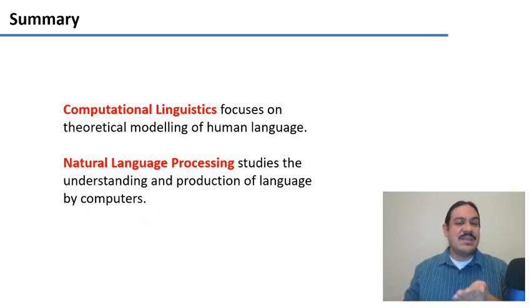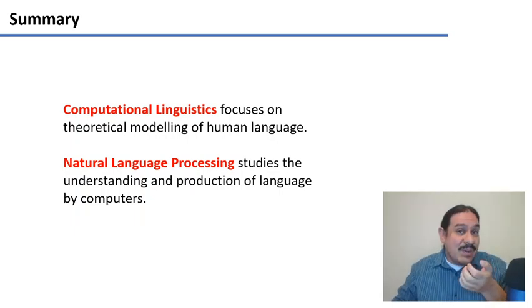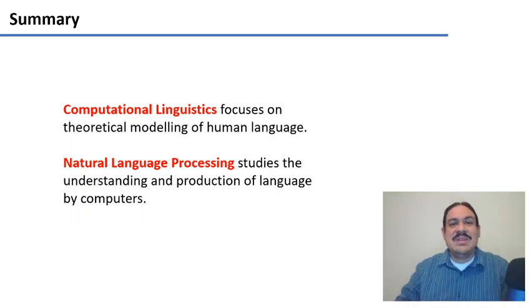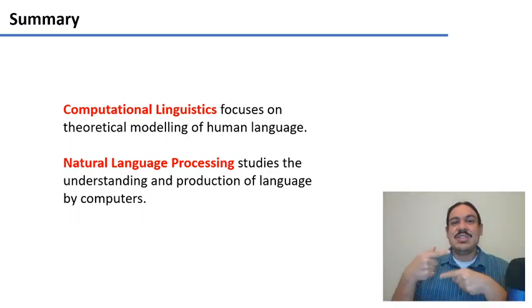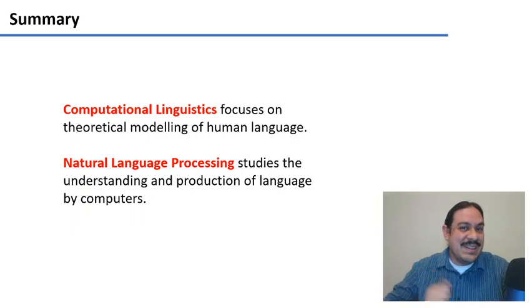The understanding, for example, is when you talk to your phone and then your phone has to try to find the nearest restaurant to you. The production is, for example, when a computer has to generate chat, as in a chatbot that interacts with you.